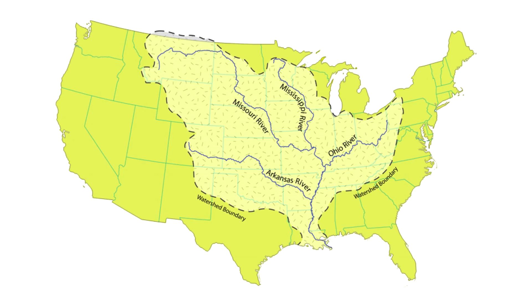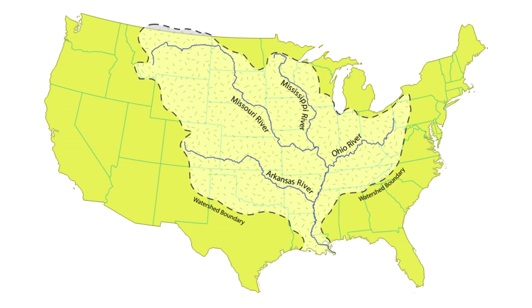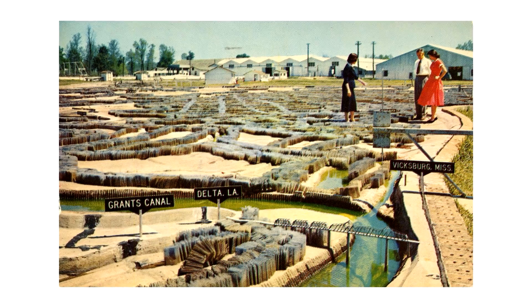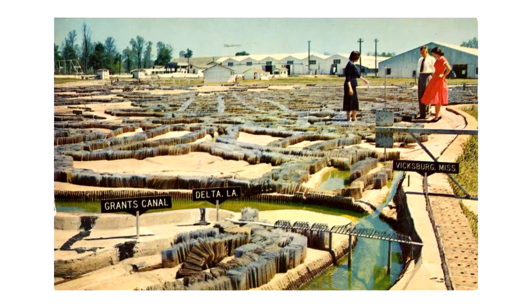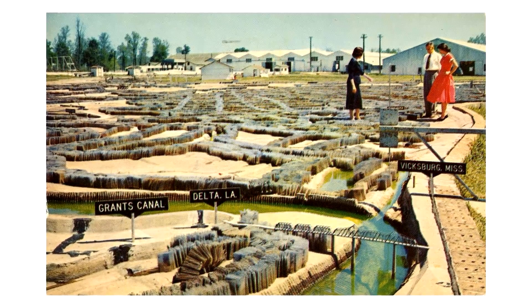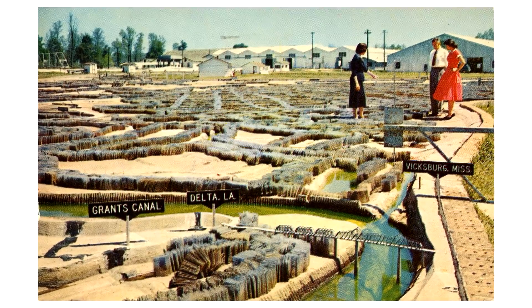From the 1940s to the 1960s, the US Army Corps of Engineers built a scale model of the entire Mississippi River Basin — a huge part of the continental United States scaled down to the size of a large park. Their goal was to understand how flooding affected communities along the river and how damage could be reduced through the use of man-made structures like levees.